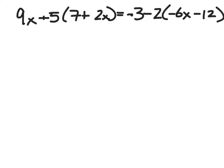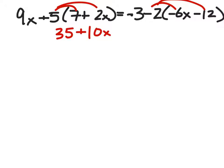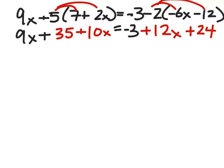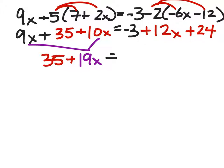For these types of problems, first distribute. That gives 35 plus 10x. On the other side, distributing the negative 2 gives positive 12x and positive 24. The rest stays the same. Now combine like terms: 9x and 10x gives 19x, still with 35, and that equals negative 3 and 24, which gives 21, plus 12x.